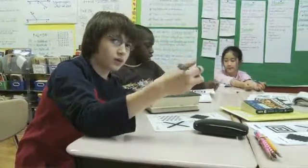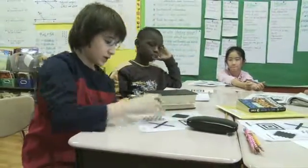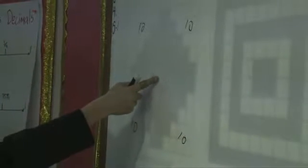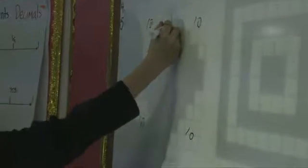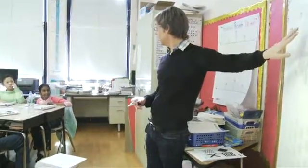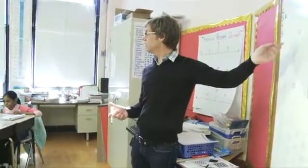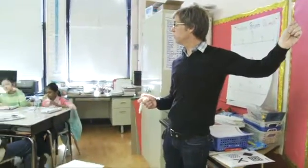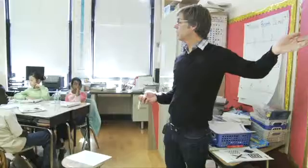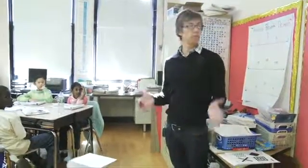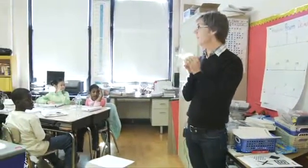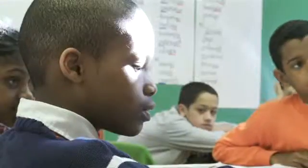So you counted half. Come up here and show us. Draw the line, please. Is this exactly half though? How do you know? Ruben? They're symmetrical — if you fold them in half, they're going to go right on top of each other without any overlap.